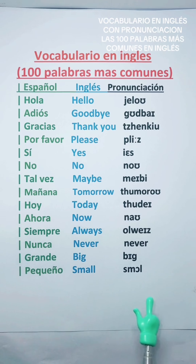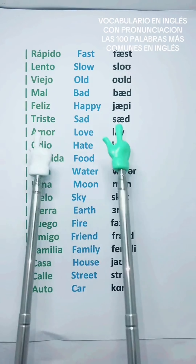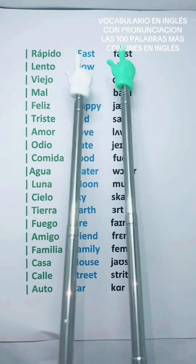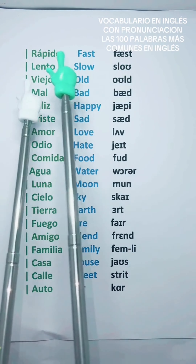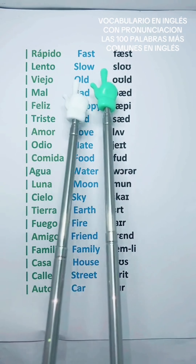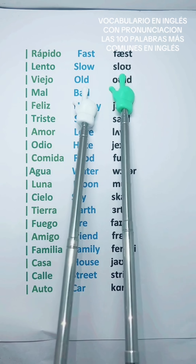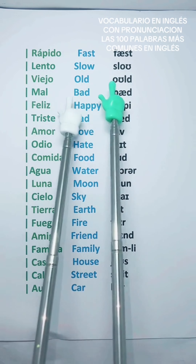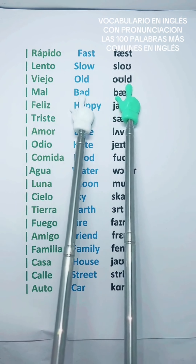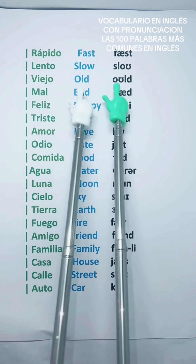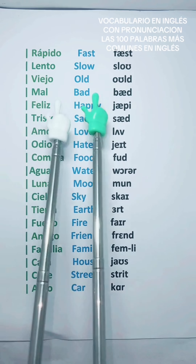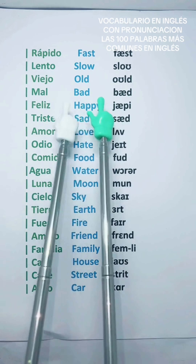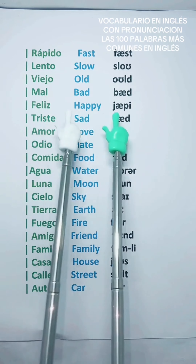Pequeño — Small. Rápido — Fast. Lento — Slow. Viejo — Old. Malo — Bad.